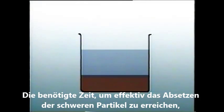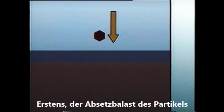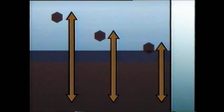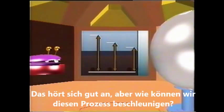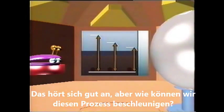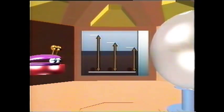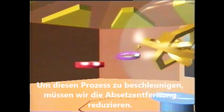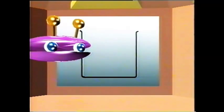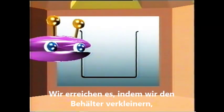The time required to complete the settling process efficiently depends, in turn, on two other factors: firstly, the settling velocity of the particles, and secondly, the distance they have to travel. But how can I use these factors to speed up the process? To make the settling process faster, we need to reduce the distance particles have to travel. We do this by making the vessel shallower.